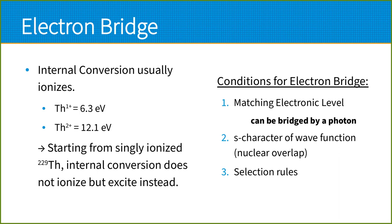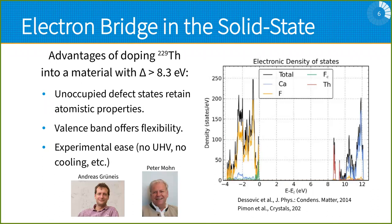I like to use the term electron bridge. What are the conditions for such an electron bridge or bound internal conversion process? First, we need energy conservation — there needs to be an electronic level that matches the nuclear energy, but this does not need to be exact; it can be bridged by a photon. For instance, if there's an electronic transition at 10 eV, a photon with an energy of 1.7 eV may be emitted to account for the energy difference. There also needs to be an S character of the wave function — S states have a finite probability at the nucleus — and the usual selection rules concerning total angular momentum and parity apply.